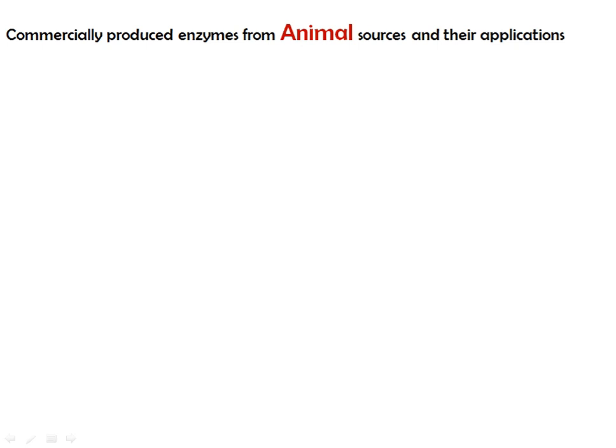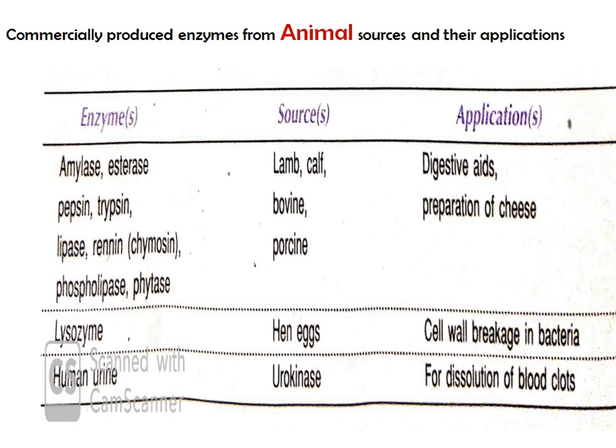Enzymes commercially produced from animal sources and their applications: Amylase and esterase are obtained from lamb and calf, used for digestive purposes. Pepsin and trypsin are obtained from bovine, used for cheese preparation. Lipase, renin, phospholipase, and phytase are obtained from porcine. Lysozyme is obtained from hen egg and used for the breakdown of bacterial cell walls. Urokinase from human urine is used for the dissolution of blood clots.